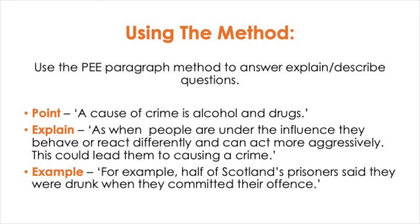Here is an example of a P-E-E paragraph. Point: A cause of crime is alcohol and drugs. Explain: As when people are under the influence they behave or react differently and can act more aggressively, which could lead them to causing a crime. Example: For example, half of Scotland's prisoners said they were drunk when they committed the offence.